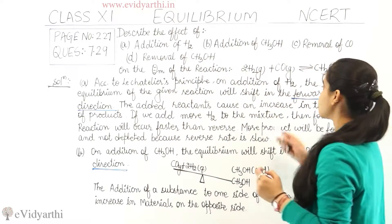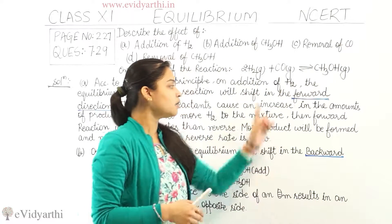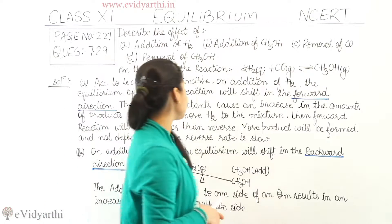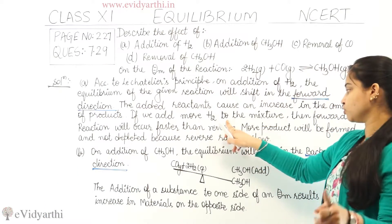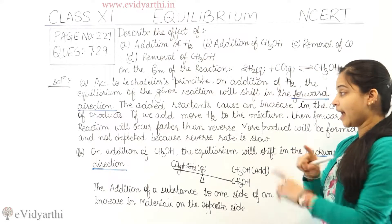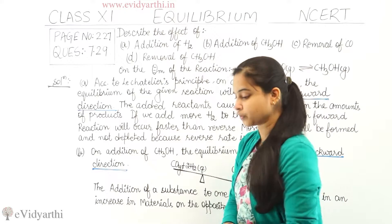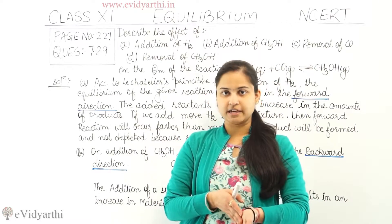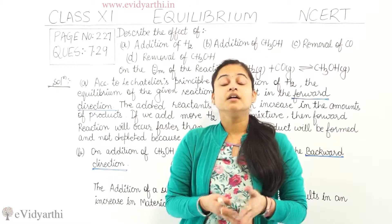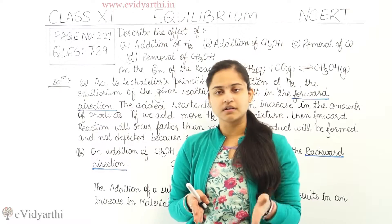According to Le Chatelier's principle, on addition of hydrogen the equilibrium of the given reaction will shift in the forward direction. The added reactants cause an increase in the amounts of products. If we add more H₂ to the mixture, the forward reaction will occur faster than the reverse. More product will be formed and not depleted because the reverse rate is slow. So the reaction will shift in the forward direction and more product will be formed.